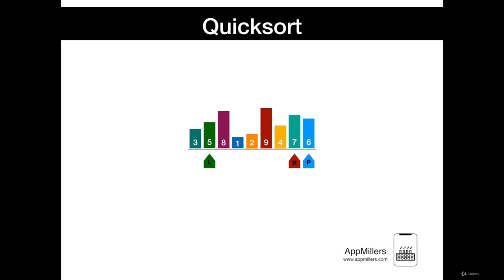We compare 6 with 5 and see that 5 is less than 6, so we continue to move right. When it reaches a number greater than or equal to the Pivot number — Pivot is 6 — it stops. Here, 8 is greater than 6, so we stop here. Then the right marker will move to the left, and when it reaches a number that is less than the Pivot number, it stops. In the next move, 4 is less than 6, so the right marker stops. When both left and right markers are stopped, the markers' numbers are swapped — here we swap 8 with 4.